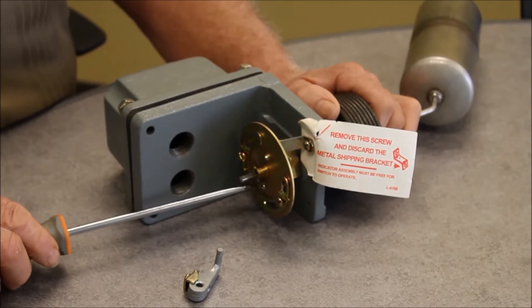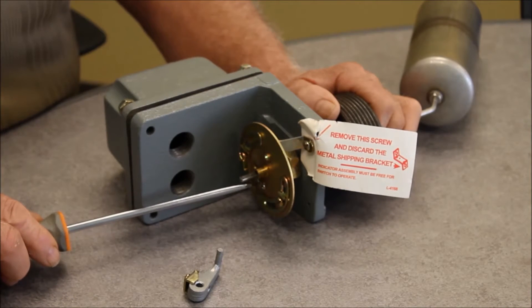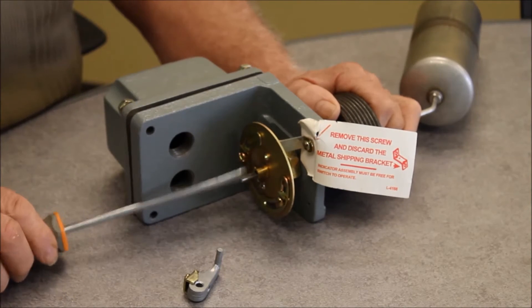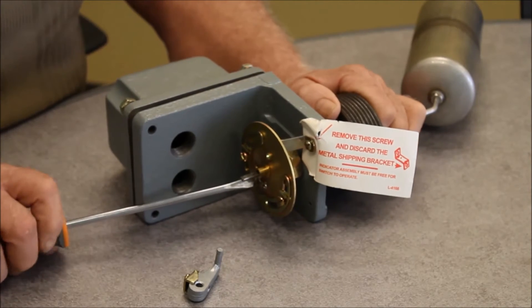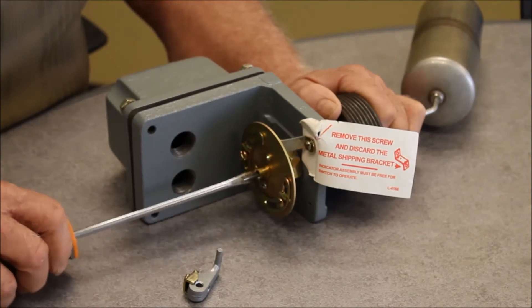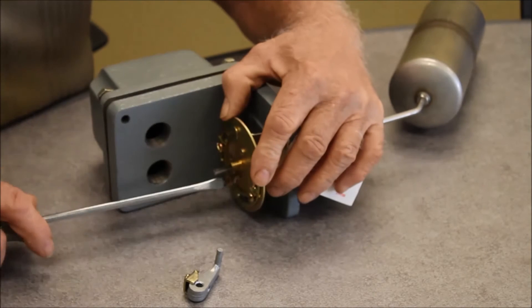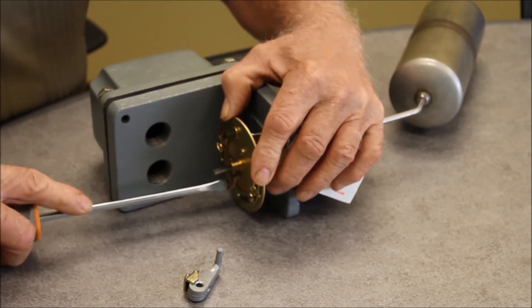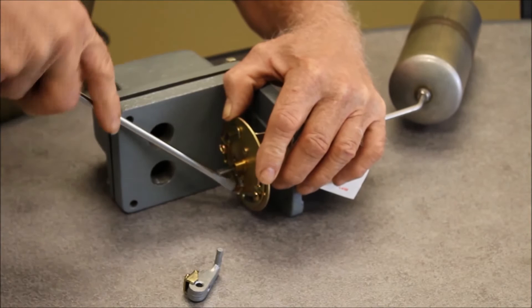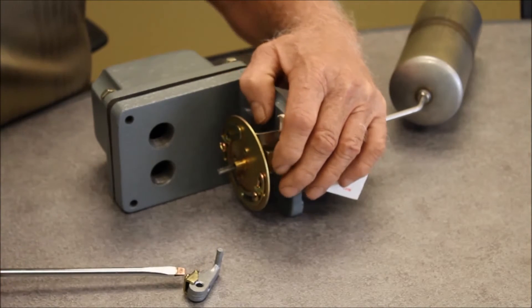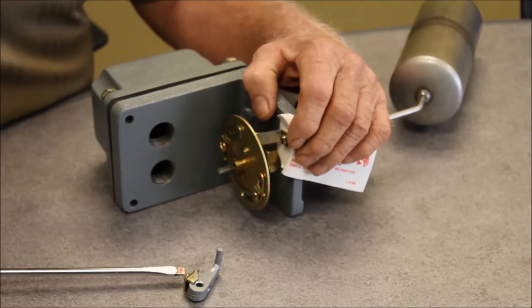The next step is to remove the clip holding the mechanism onto the end of the shaft. This removes the indicator plate and the adjustments and allows access to the actual quad ring seal.